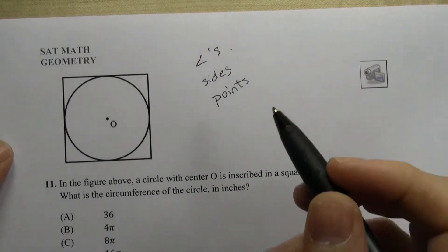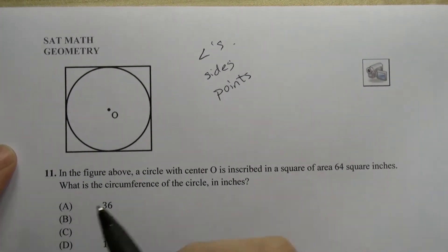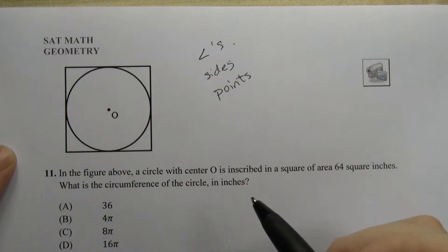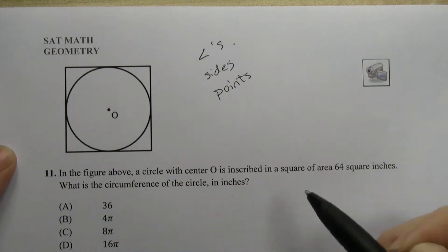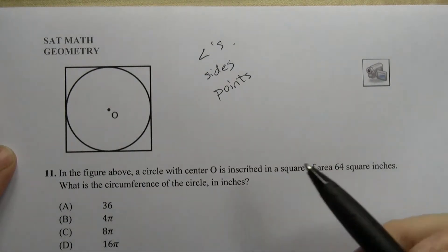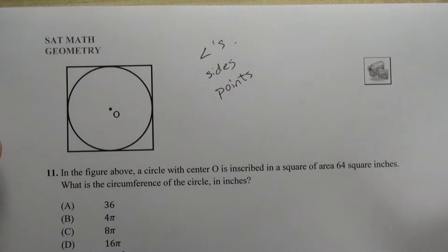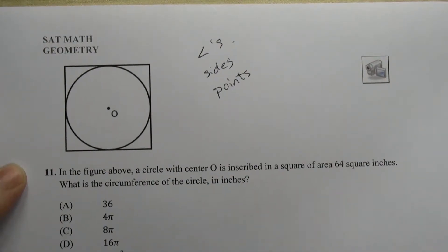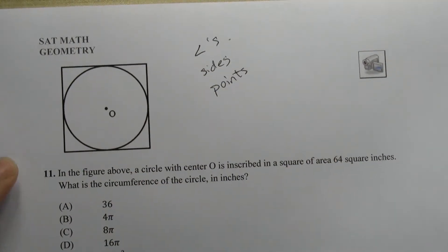Let me show you a few examples. For number 11, the figure shows a circle with center O inscribed in a square of area 64 square inches. They want to know the circumference of the circle in inches. The circumference is πd or 2πr, so in order to find the circumference of the circle, we need to find the diameter or the radius.